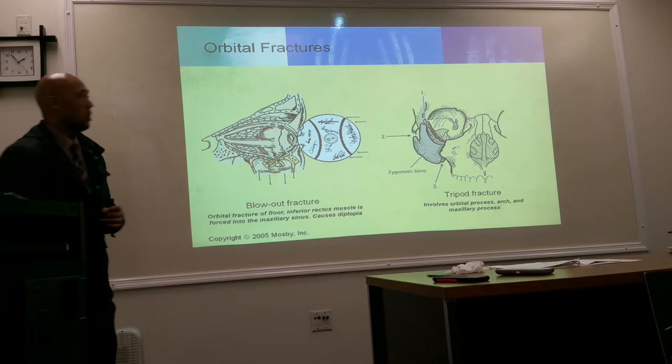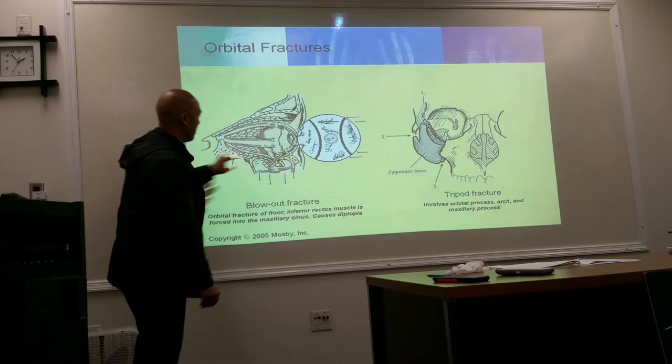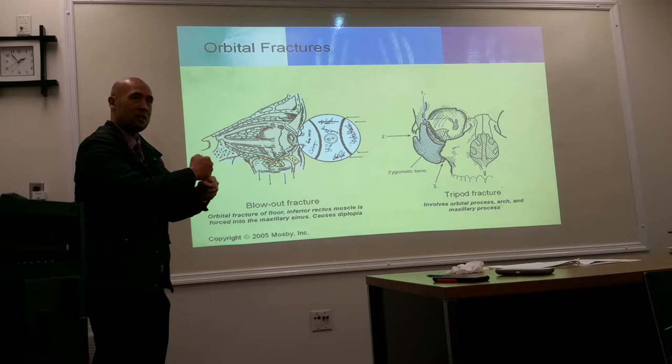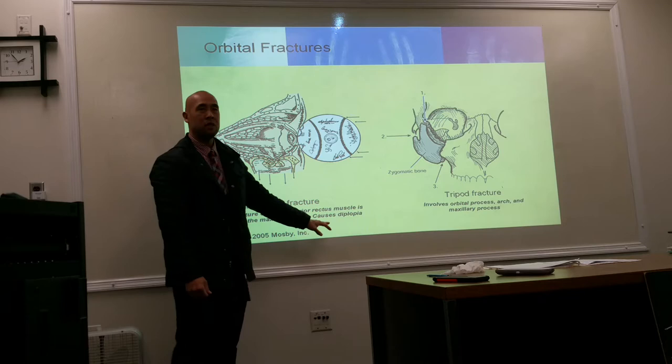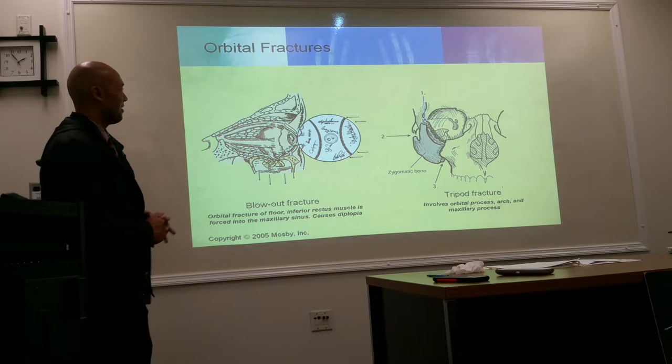There are different types of orbital fractures. A blowout fracture is an orbital fracture of the floor that drives the inferior rectus muscle down beneath the floor, where it gets trapped and causes diplopia — double vision.